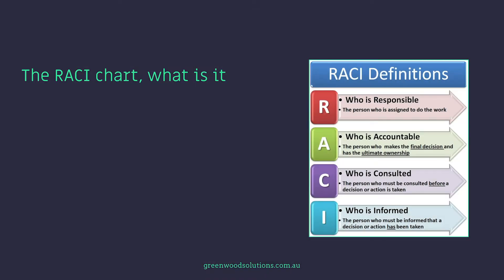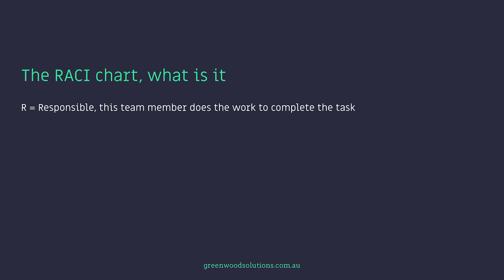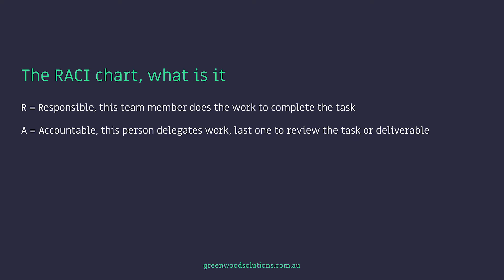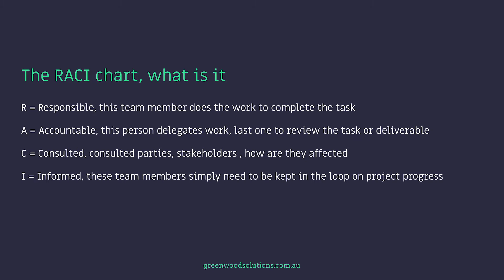Now, we're going to talk RACI. What does RACI mean? The R stands for Responsible — this team member does the work to complete the task. The A is Accountable — this person delegates the work and is the last one to review the task or deliverable. C is Consulted — that's a consulted party, whether it's the stakeholders and how they are affected. I stands for Informed — these team members simply need to be kept in the loop on project progress, but they don't need all the information. Multiple people can be responsible, but there can only be one entity or person accountable. Many people are consulted and fewer are informed. You can also be both accountable and responsible — that's an important point to make.